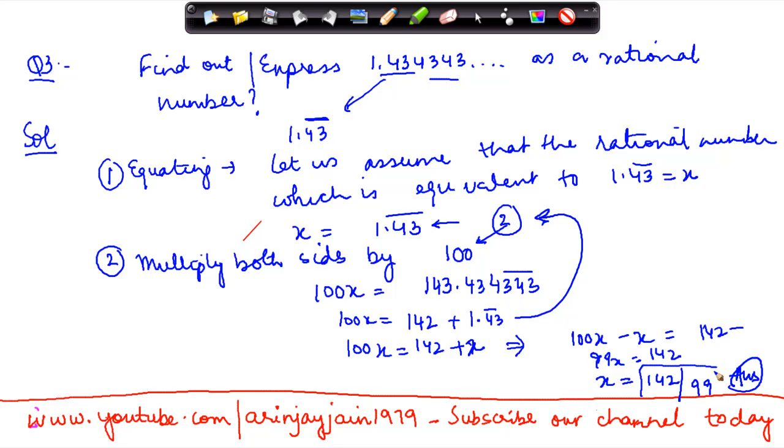So now we have x equals 142/99, where in the form p/q, p equals 142 and q equals 99. Because 99 is not equal to 0, therefore x is a rational number.